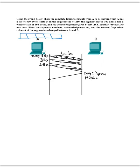The acknowledgement number from B is 550, meaning 'I have correctly received up to byte 449, send me 550 next.' A then sends segment with sequence number 550, and then 650. That covers all five segments — A has finished sending. However, TCP is reliable, so A cannot assume the transfer is done; it must wait to receive a positive acknowledgement.